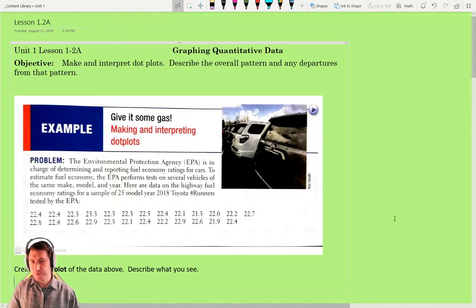Hello AP Statistics students. In this video we're going to take a look at graphing quantitative data. We're moving away from categorical data to numbers, quantitative data. But just like categorical data, we first need to draw a picture. Then we'll be able to describe what we see in that picture and analyze our data. There are a few very specific things that I have in mind when you're describing that overall pattern.